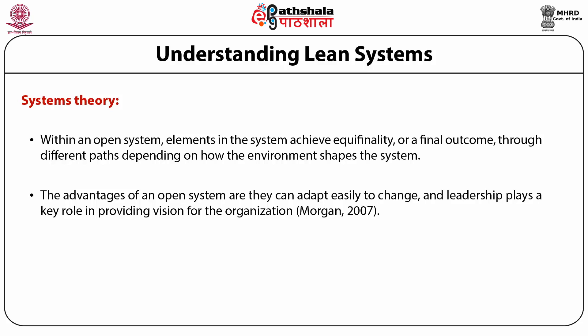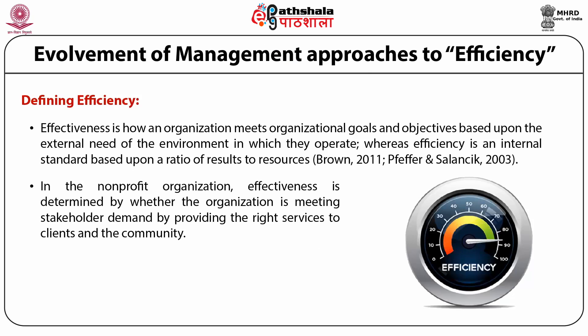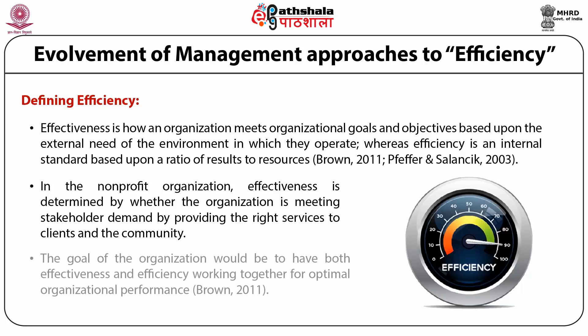Open systems involve multiple stakeholders such as leaders, employees, competitors, regulators, compliance officers, consumers, customers, clients, suppliers, contractors, investors, and founders. Evaluating organizational efficiency occurs through a view of the entire system, not just one element. Within the nonprofit sector, the environment is constantly changing and management needs to continually evaluate components to make informed decisions affecting the whole system. The goal of the organization would be to have both effectiveness and efficiency working together for optimal organizational performance.